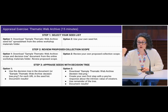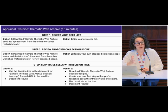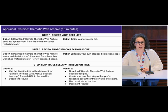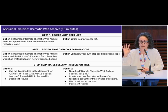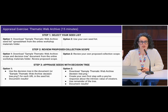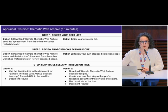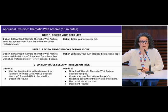After you review your proposed collection scope, you're going to appraise the seeds with the decision tree. If using Google Drive, use the decision tree in the document — or get a closer look at the PNG file 'sample thematic web archive decision tree.' Document your results and take some notes. Option two: download that PNG file from Google Drive, then create your own first step with a yes-or-no response about the intrinsic value of your creators, and follow the tree as planned. Good luck.